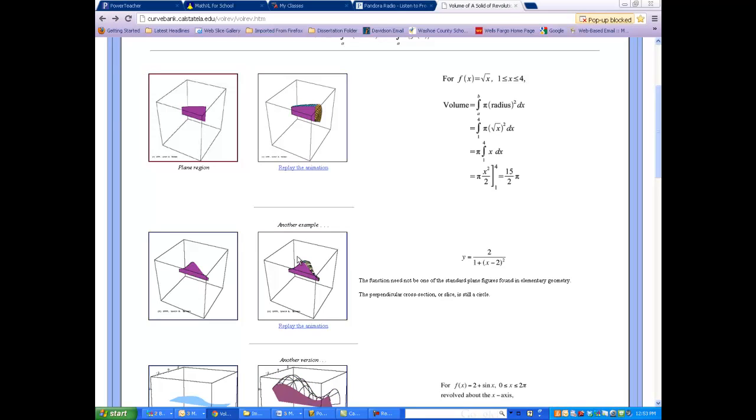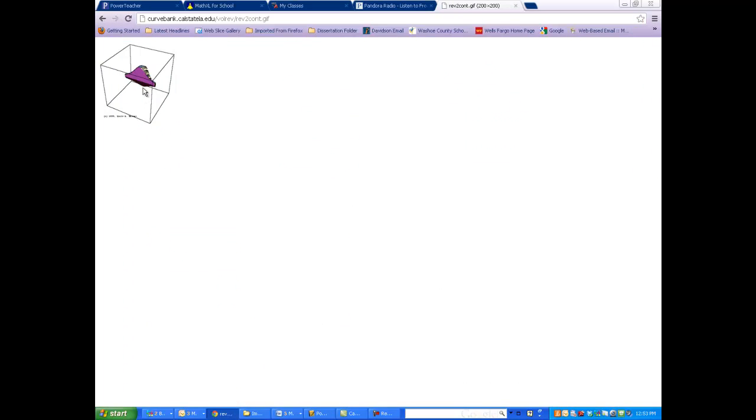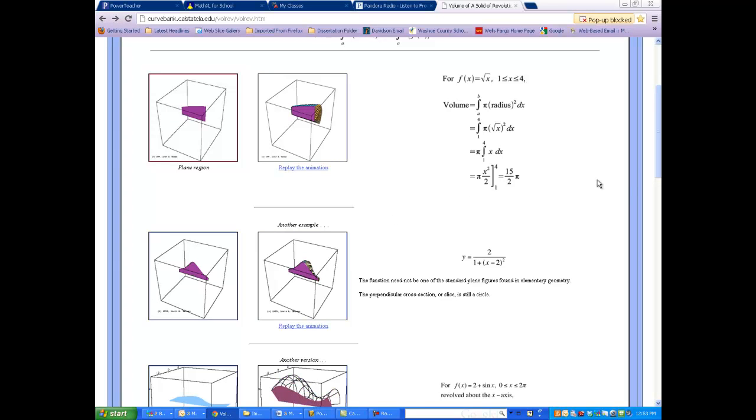Let's do another one. Check this one out. So this function right here is 2 over 1 plus quantity x minus 2 squared. Now let's watch what happens when I take it through 360 degrees. Here it comes. And there's your solid. Now it almost looks like a Christmas ornament, doesn't it? So if we start with something that looks like the bell-shaped curve in statistics and I wrap it through 360 degrees, that's what I end up with.